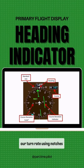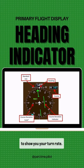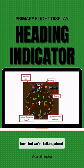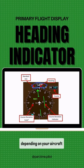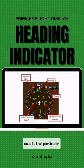The indicator also tells us our turn rate using notches for half and full standard rate turns at the top of the indicator. When turning, a colored bar will appear along the scale to show your turn rate. The color bar is not seen here, but we're talking about this scale up here. Everyone's going to be a little bit different depending on your aircraft and your PFD, that's why it's so important — before you fly a technically advanced aircraft, you get used to that particular system because they're all a little bit different.